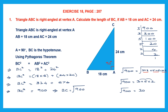So the square root of 900 is 30. That means we have found the length of BC to be 30 centimeters. This is how we work out a Pythagoras Theorem question.